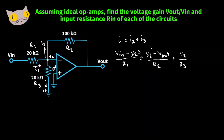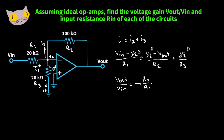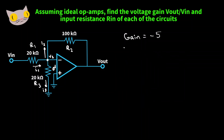Since V2 is zero, we're left with V_in over R1 equals negative Vout over R2 plus zero. Rearranging gives Vout over V_in equals negative R2 over R1, which is negative 100,000 ohms over 20,000 ohms, giving a gain of negative 5 once again. Our input resistance is 20,000 ohms, just like the last two problems.